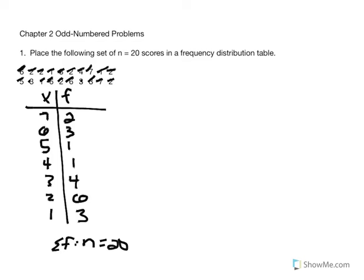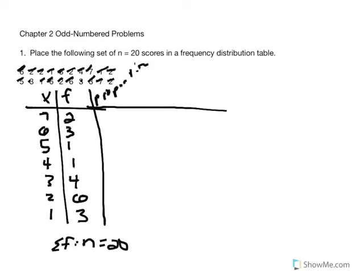This is all that this problem asks us to do, but I'm going to take it one step further to demonstrate a couple more skills we learned in this chapter. We were taught to calculate our proportions, also referred to as relative frequency. Proportions represent the part of the whole — it's the same as relative frequency — and it's equal to our frequency over N.